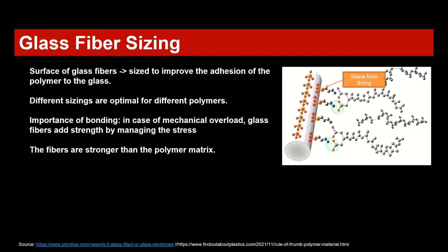The bond from the fiber to the polymer is important because it adds strength and can manage stress on the material when the polymer starts to undergo mechanical overload. The fibers are stronger than the polymer matrix, so they can increase the strength of the entire compound because stresses transfer from one fiber to the other, leaving the polymer matrix largely untouched.